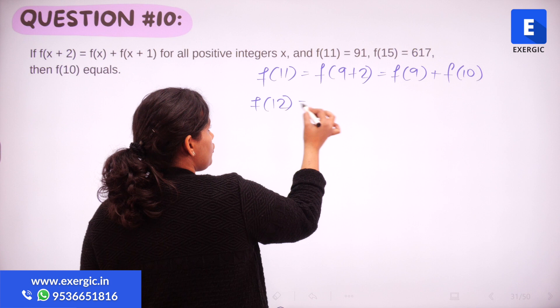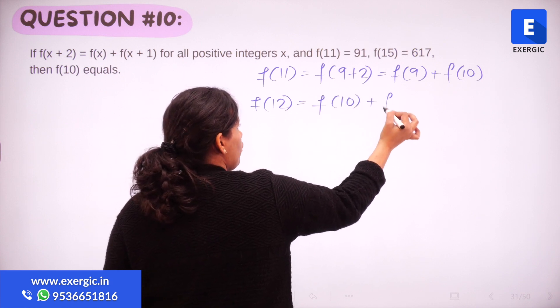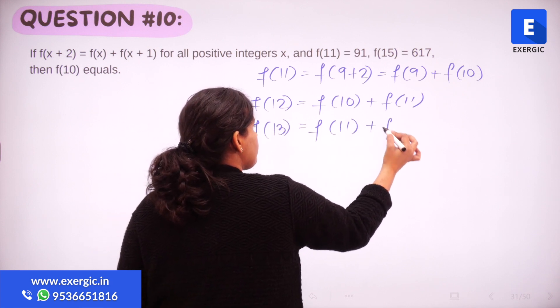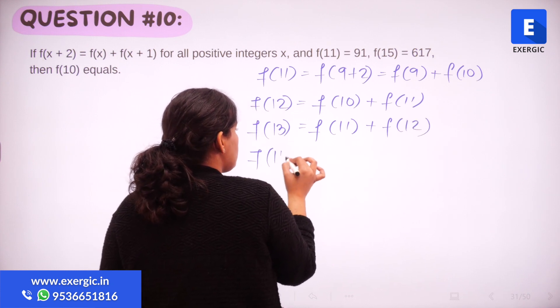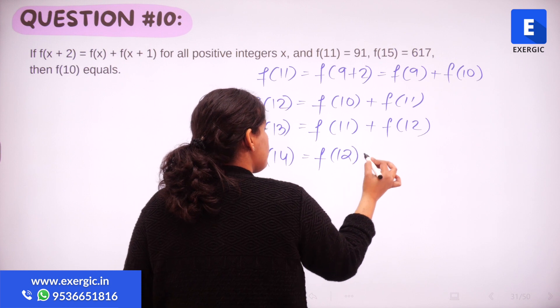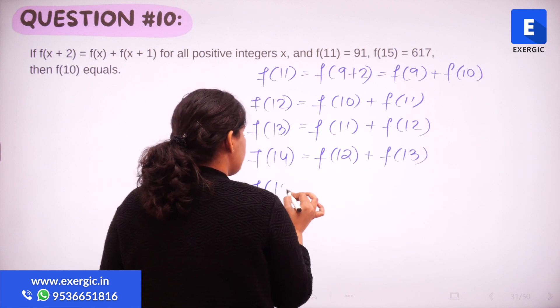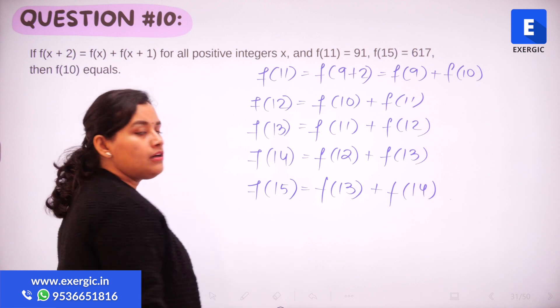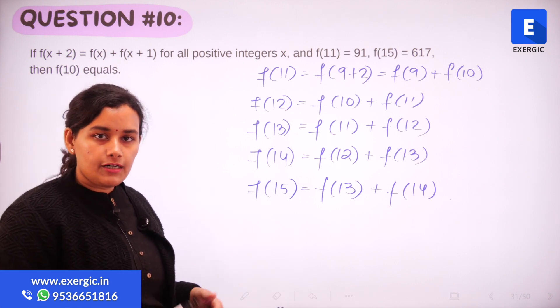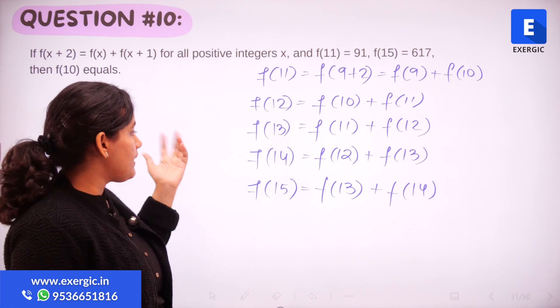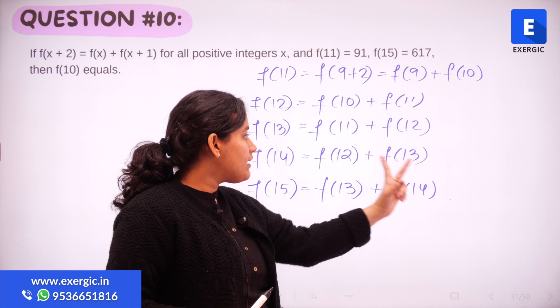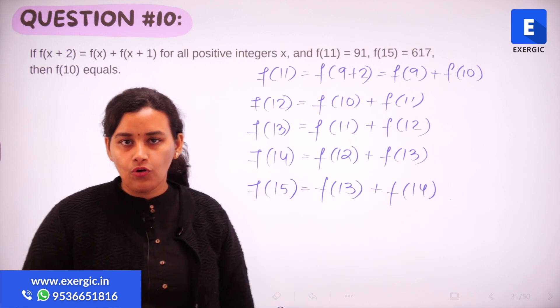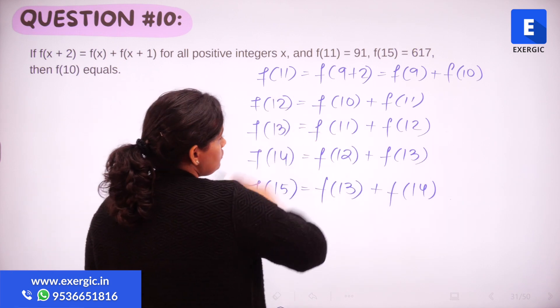Similarly, I can find out f(12), it is going to be f(10) plus f(11). f(13) on the other hand is going to be f(11) plus f(12). f(14) is going to be f(12) plus f(13) and finally we will be having f(15) as f(13) plus f(14). This is the pattern that we are getting. We do have a lot of common terms. In all of this I want to find out f(10). Now this f(10), it's in the expression of f(12).